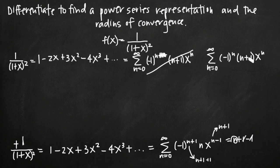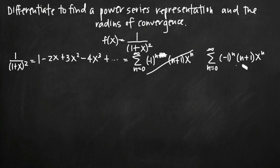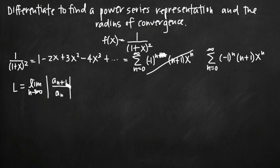Now we need to find the radius of convergence. The easiest way is to use the ratio test, which says l equals the limit as n goes to infinity of the absolute value of a sub n plus 1 divided by a sub n. If l is less than 1, the series converges. So we evaluate this limit and set our answer less than 1 to find where the series converges, giving us the radius of convergence.